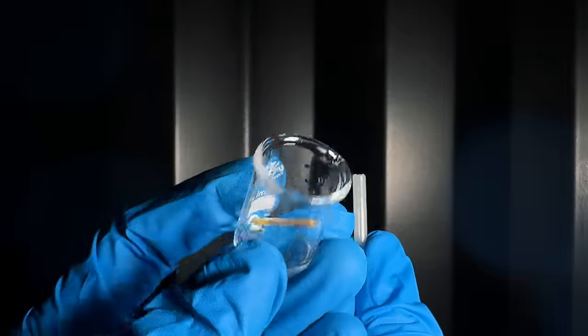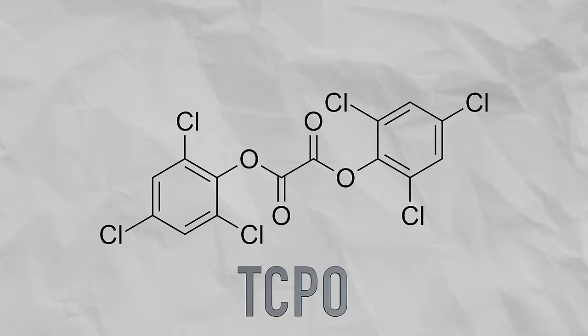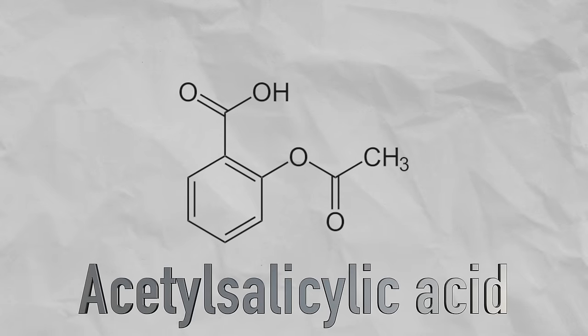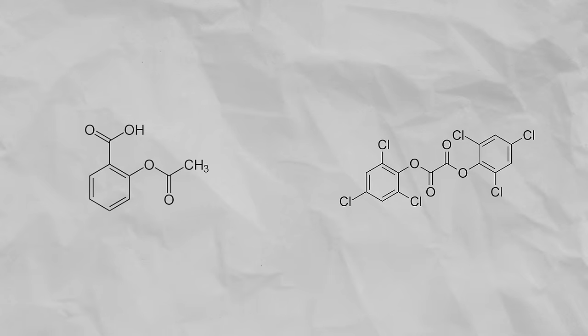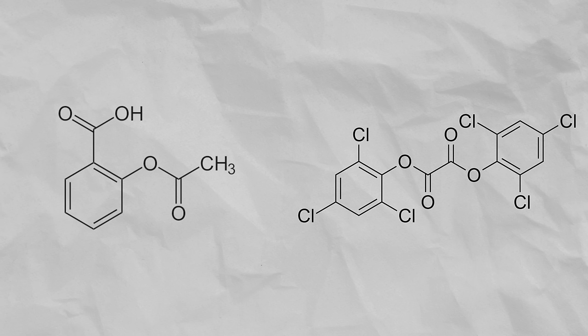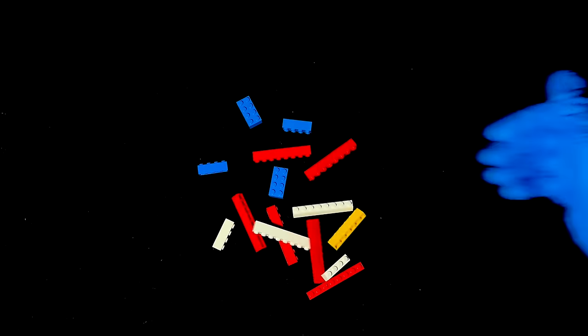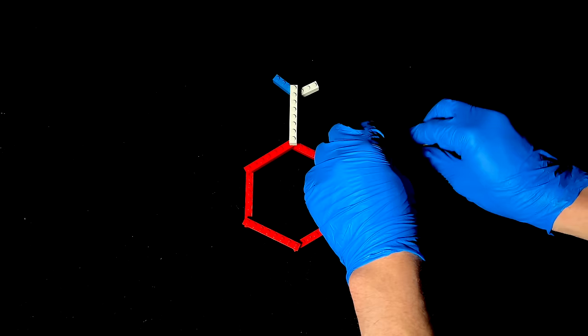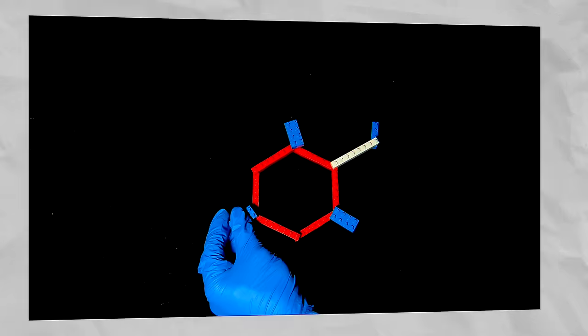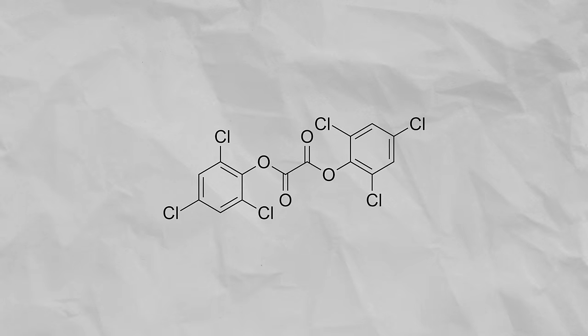The main ingredient in glow sticks is a chemical called TCPO. The active ingredient in aspirin is acetylsalicylic acid. On the first glance, these molecules look completely different apart from the benzene ring. But to a chemist, molecules are like Lego. You can turn anything into anything. Replace a piece there, connect a new one here and boom, you reach your target molecule.